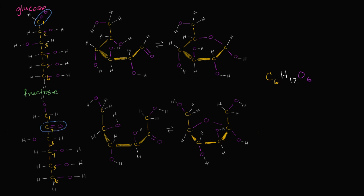To get a little more experience with names for different functional groups: when we studied glucose, we knew that if you have a carbonyl group at the end of a carbon chain — where the carbon in the carbonyl group is bonded to a hydrogen and then the rest of the carbon chain — you would call this an aldehyde functional group, which allows the entire molecule to be categorized as an aldehyde. Over here, where the carbon in the carbonyl group is in the middle of the chain and is bonded to two different carbons, we call this a ketone functional group. So fructose would be considered a ketone.